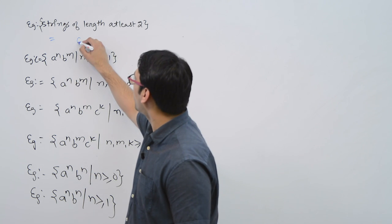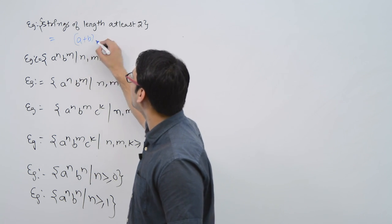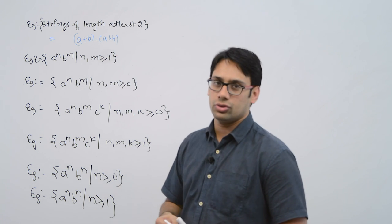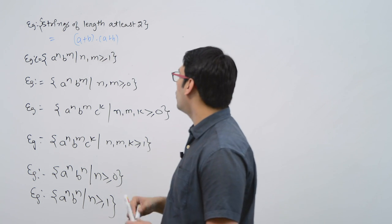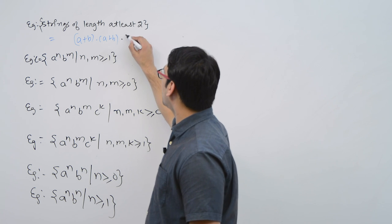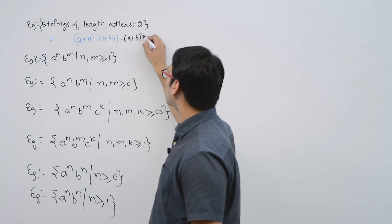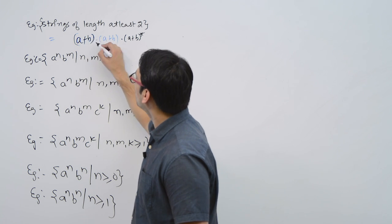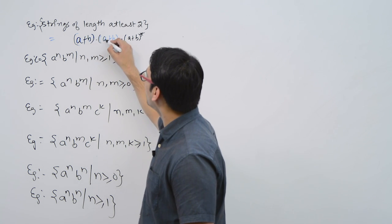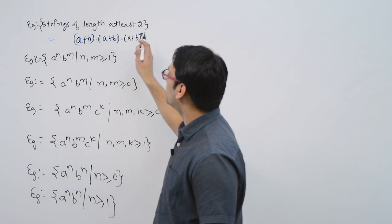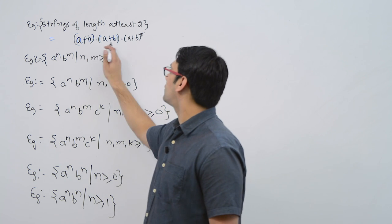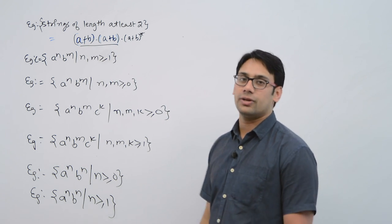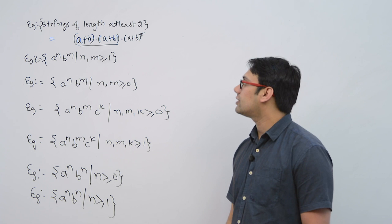This can be represented as a string of length 2 — (a+b) concatenated with (a+b) — then concatenated with (a+b)* . This represents a string of length 2, and we can have any length after that. If you expand it, you can see we get all strings of length at least 2.